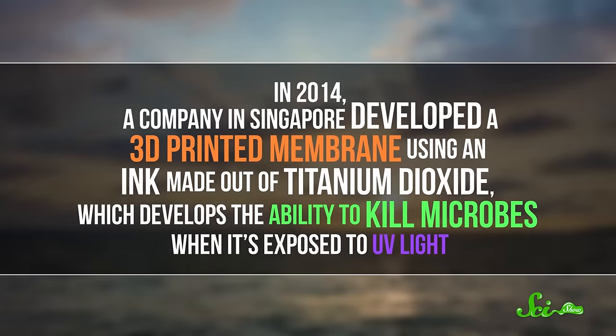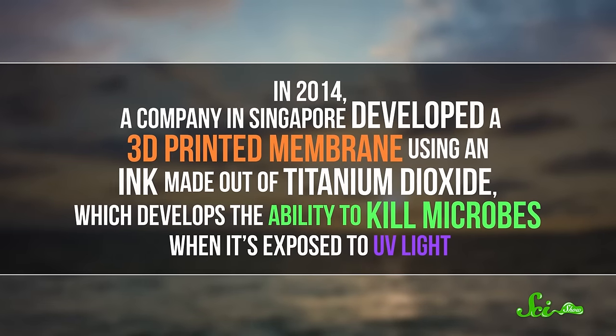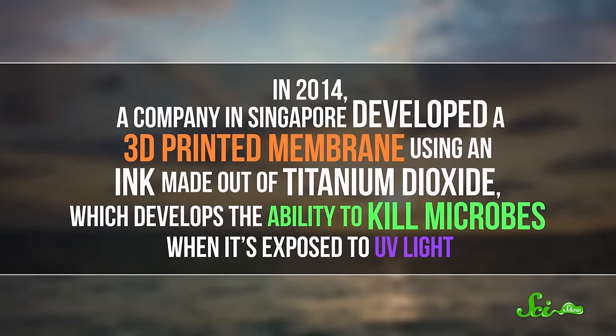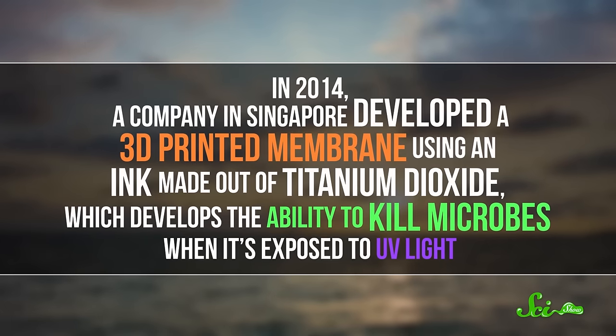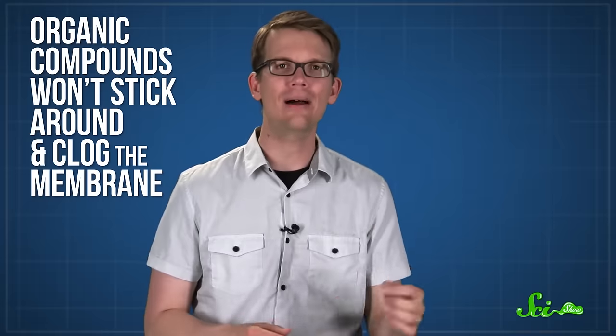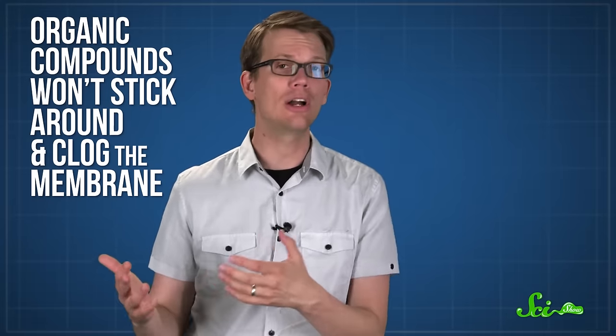But in 2014, a company in Singapore developed a 3D-printed membrane using an ink made of titanium dioxide, which develops the ability to kill microbes when it's exposed to UV light, like from the sun. So when the water passes through the UV-exposed membrane, any dangerous microbes die. And the membrane also breaks down organic compounds, so they don't stick around and clog it up.